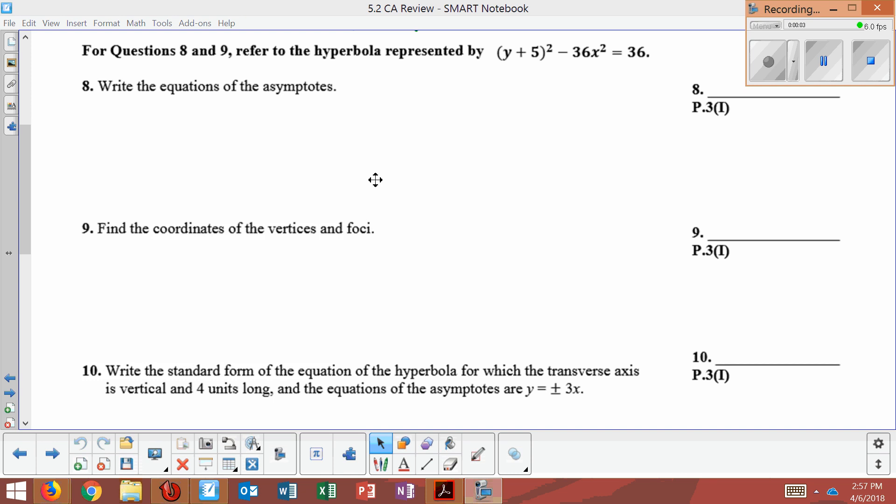Questions 8 and 9 refer to the hyperbola represented by y plus 5 quantity squared minus 36x squared equals 36.